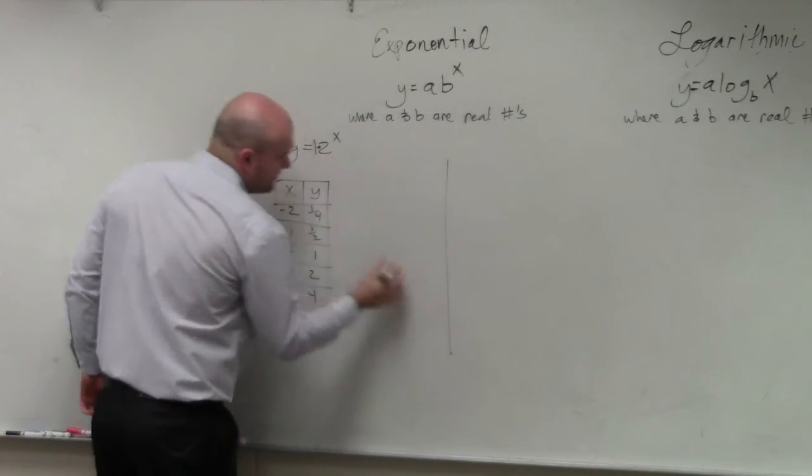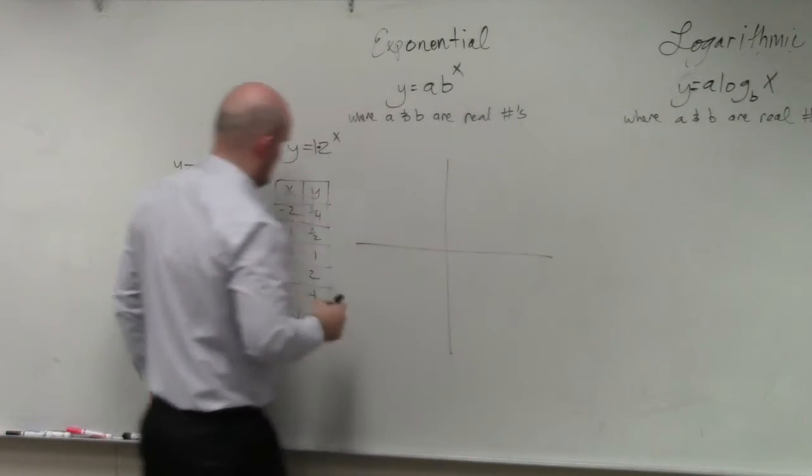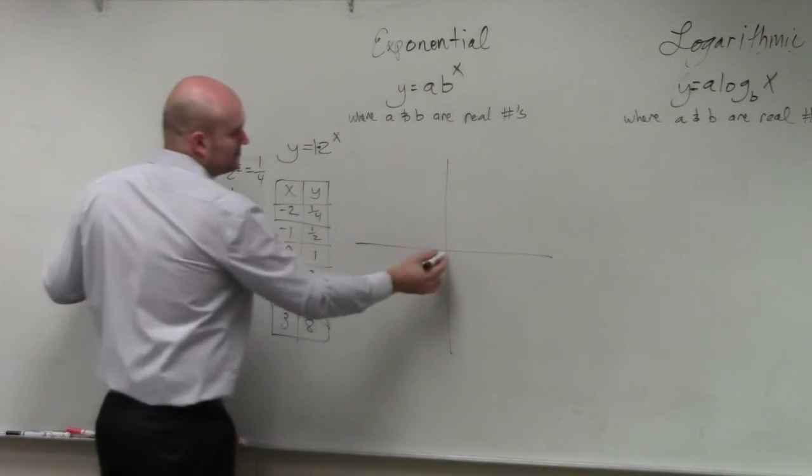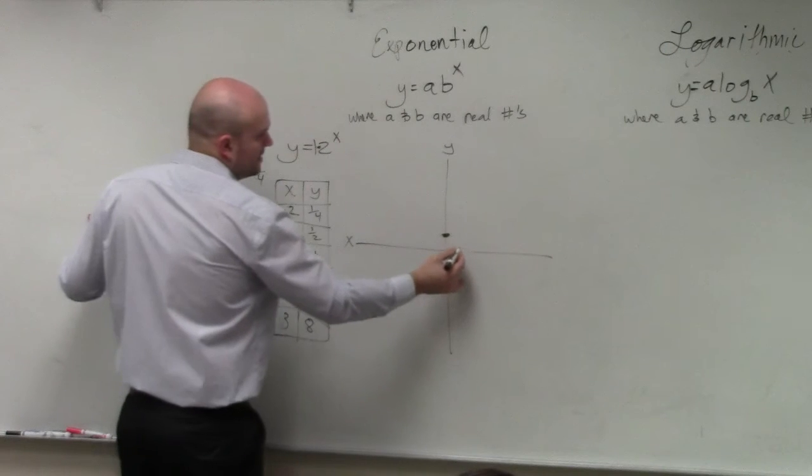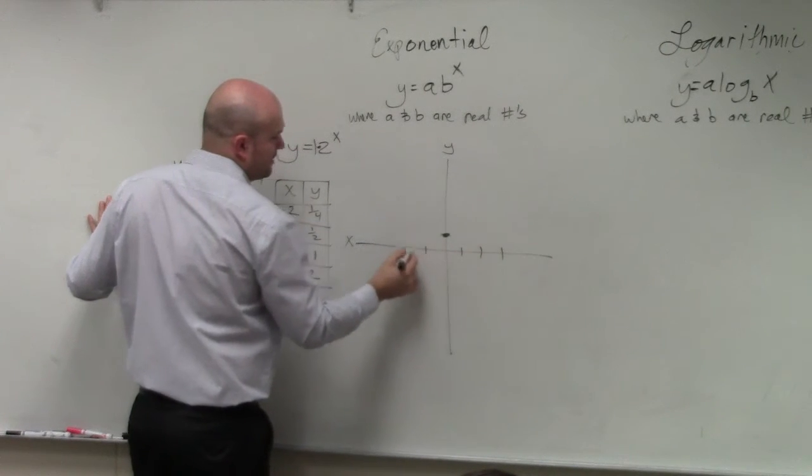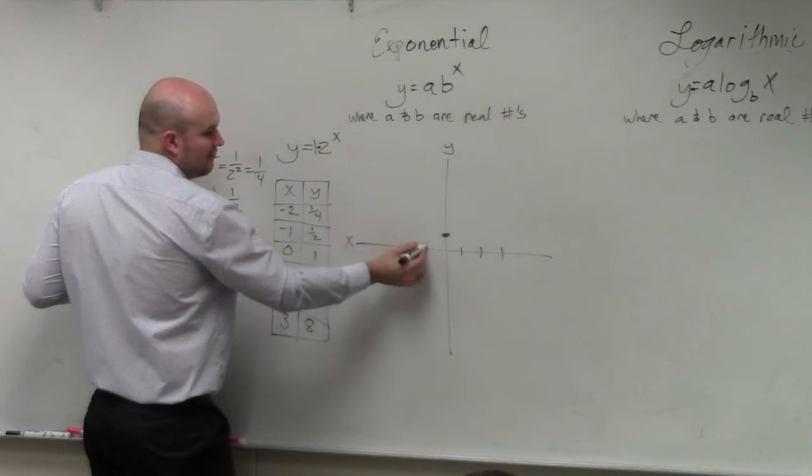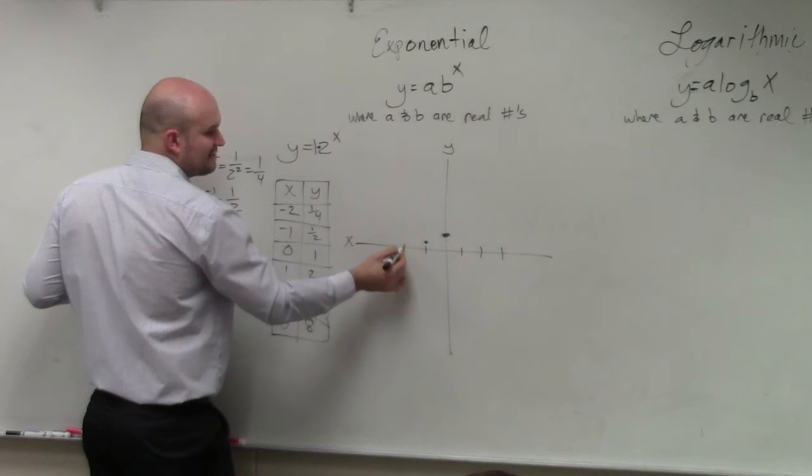So if I was going to graph this, start at 0 and go up to 1. That's my y-axis, that's my x-axis. Setting up the scale: 1, 2, 3. At x equals negative 1, we're at y equals a half. And at negative 2, we're at a quarter.